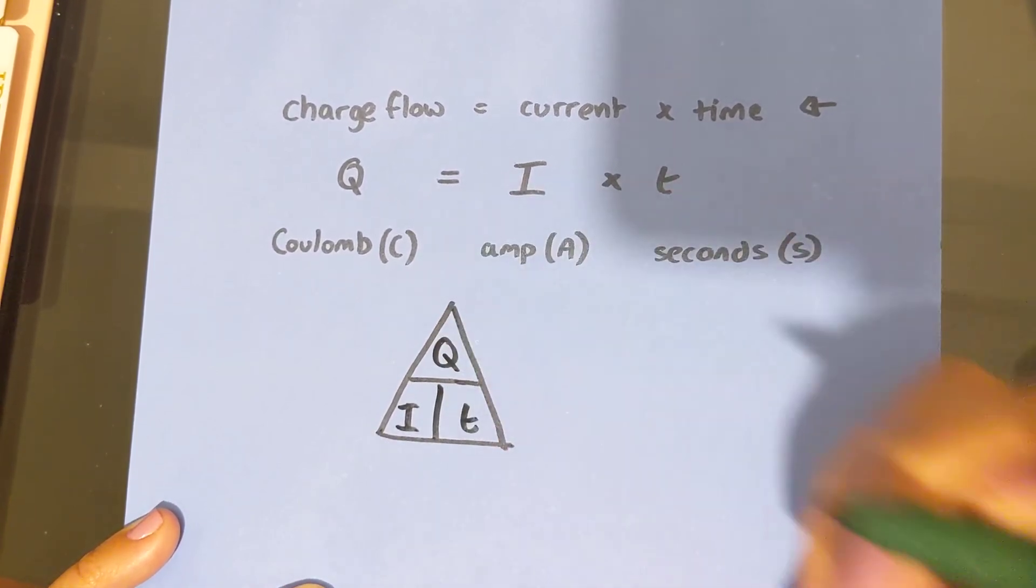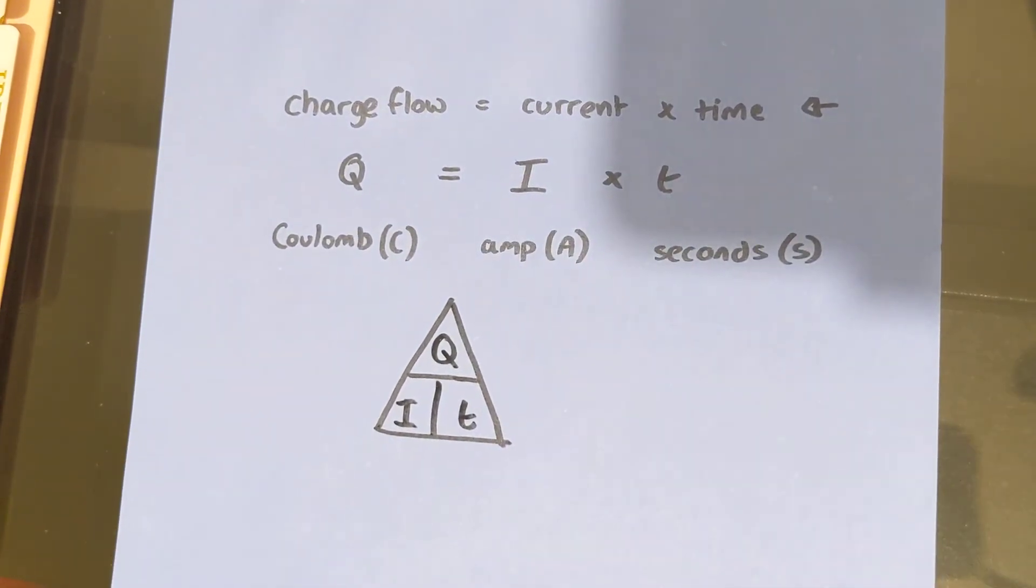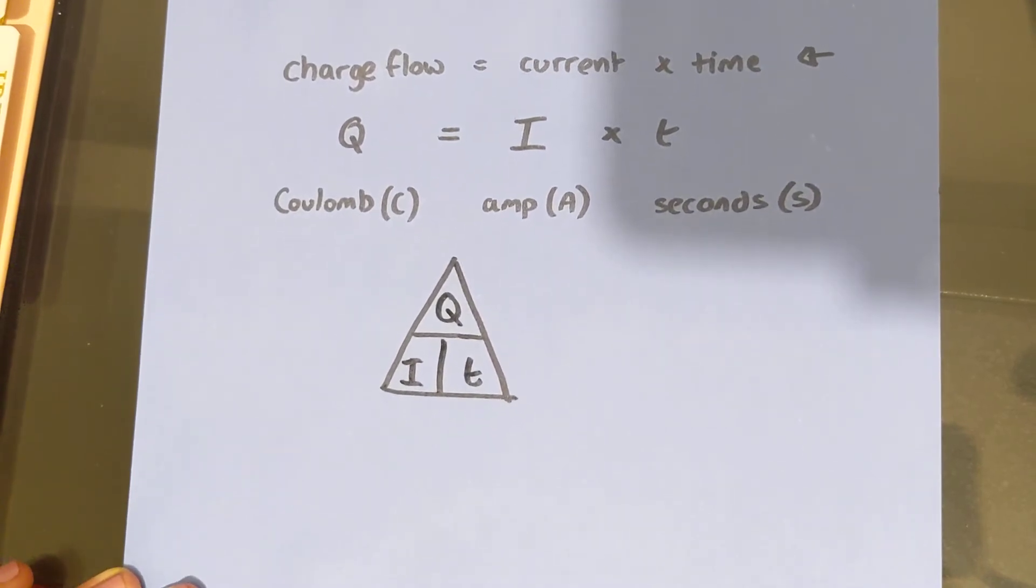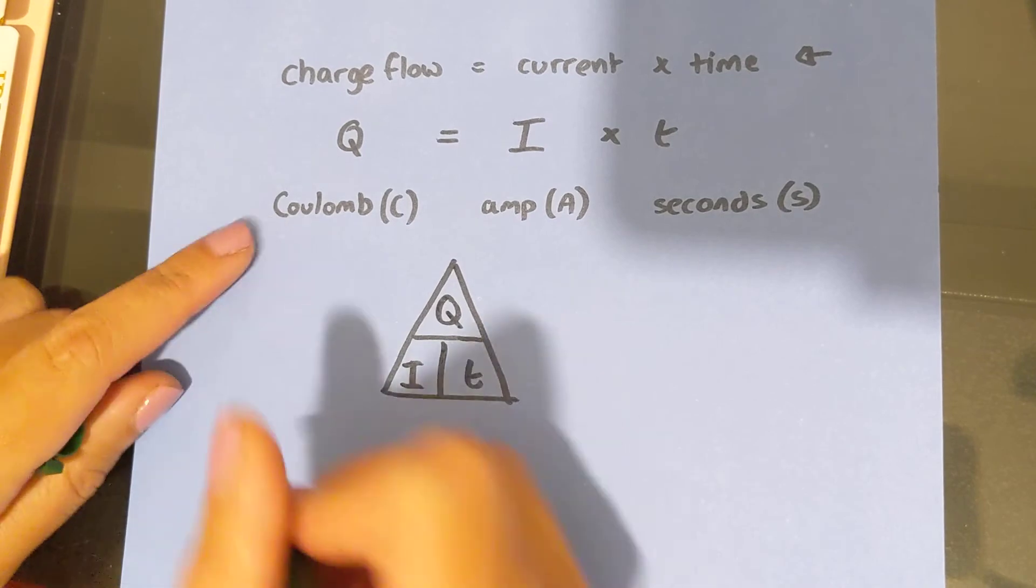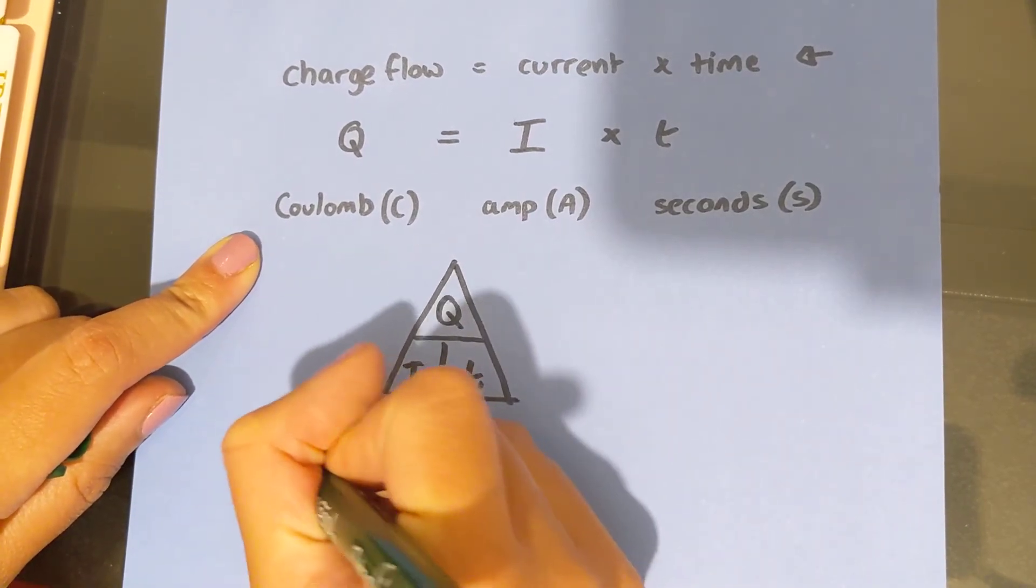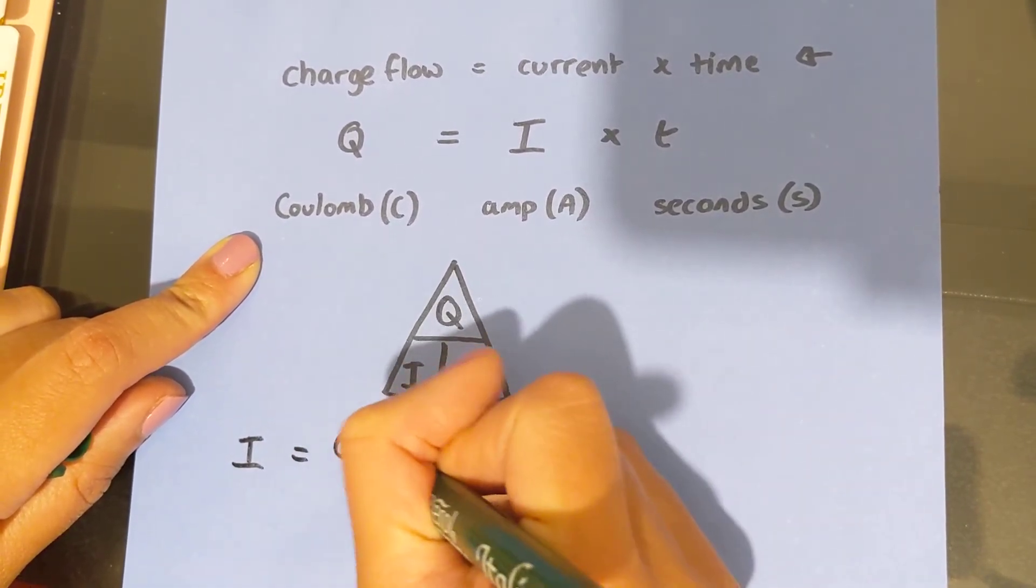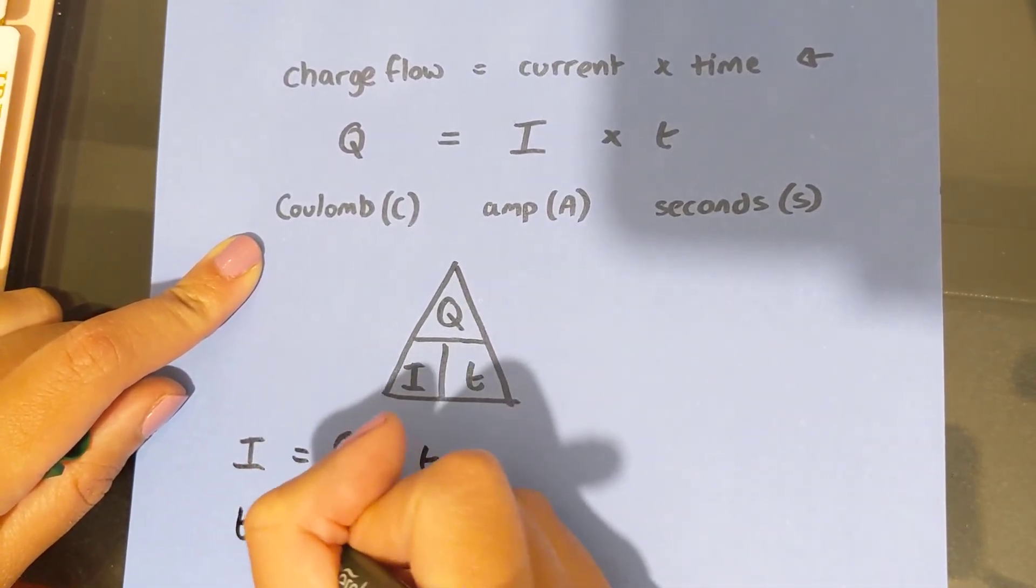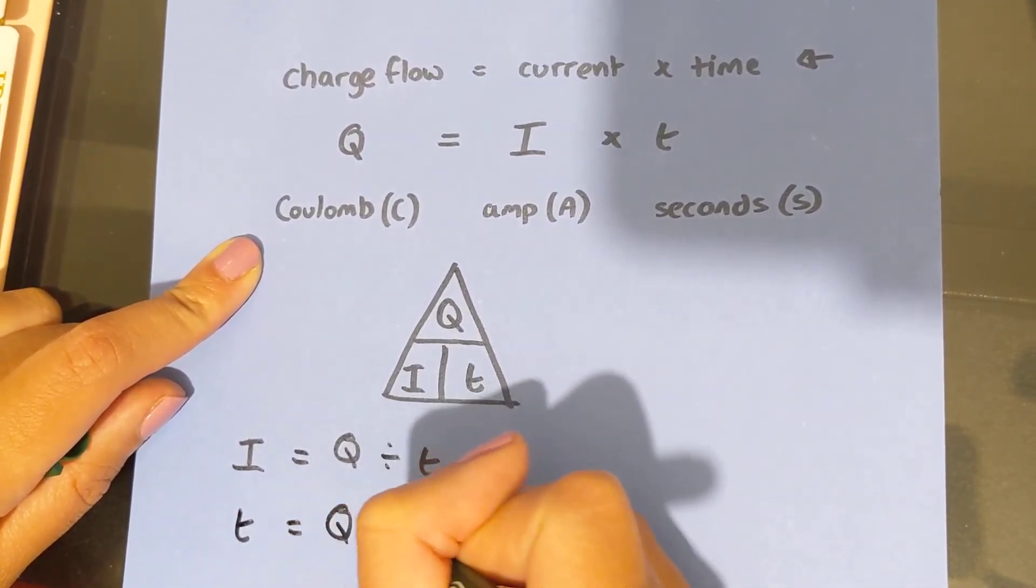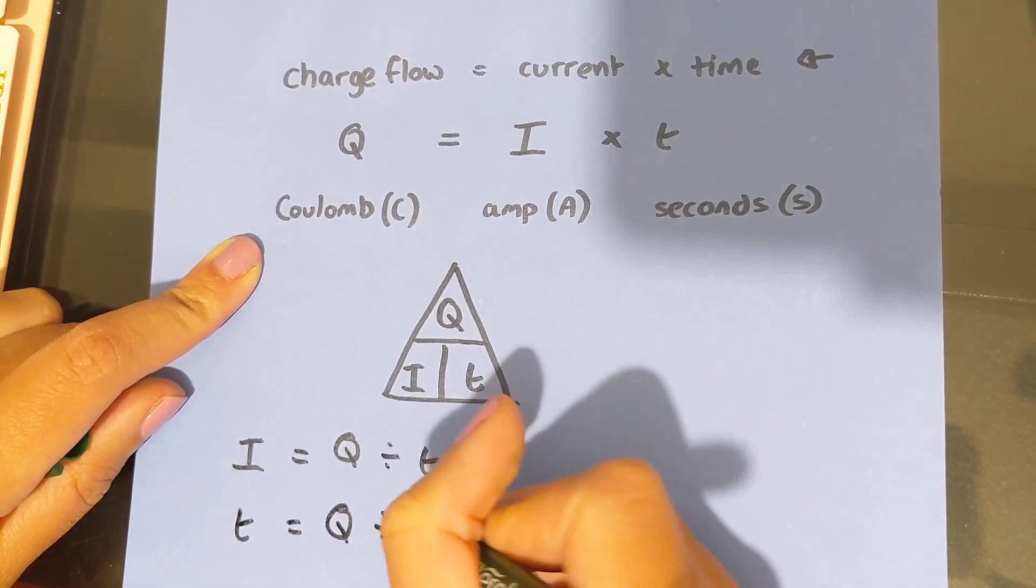And then charge flow is at the top. That means if we're going to rearrange the equation, we are going to get the current equals charge flow divided by time. And time equals charge flow divided by current.